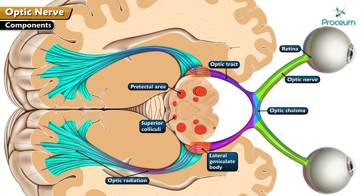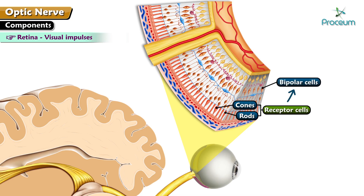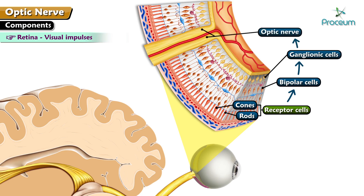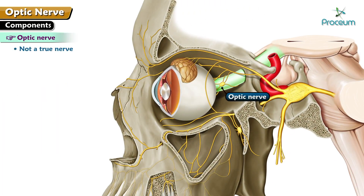The components also include optic radiation and visual cortex. The retina receives visual impulses from the receptor cells, which include the rods and cones, and transmits them to bipolar cells and later to ganglionic cells. The axons of the ganglionic cells collectively form the optic nerve, which initiates from the optic disc.